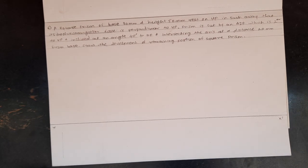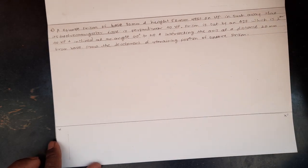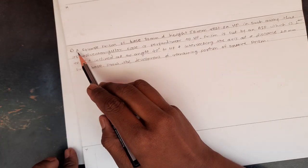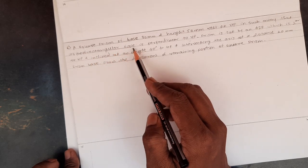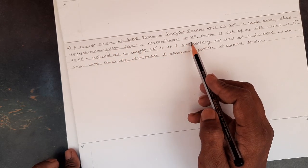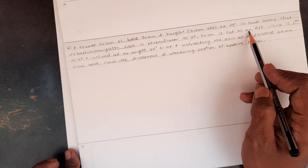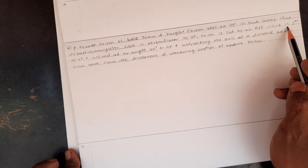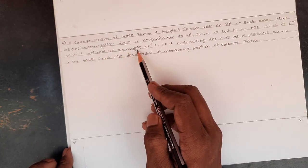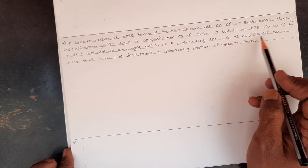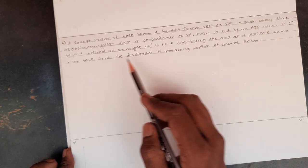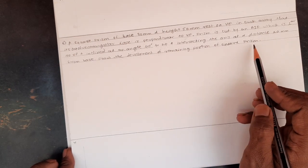Welcome to the fourth lecture of development of lateral surfaces. In this lecture we will study the development of a square prism. The problem statement gives a square prism of base 30mm and height 50mm, resting on the HP such that one of its rectangular faces is perpendicular to the VP. The prism is cut by an auxiliary inclined plane which is perpendicular to the VP and inclined at 40 degrees to the HP, intersecting the axis at a distance of 20mm from the base. Draw the development of the remaining portion of the square prism.